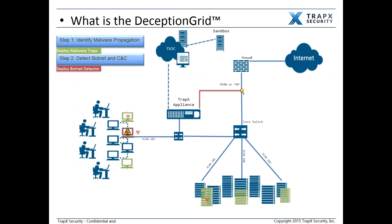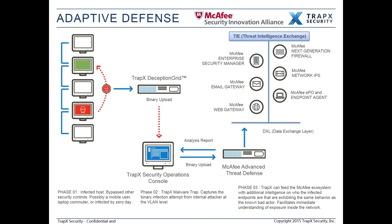One of our key integrations worth mentioning is our connection into the McAfee Threat Intelligence Exchange. Using the DXL communications layer, lessons learned within the Trapex deception grid infrastructure — for example from malware on the network — can be used to automatically propagate through the McAfee infrastructure and inoculate machines on an Intel managed infrastructure, according to lessons learned from zero-day or new malware identified as a result of one of these attacks.